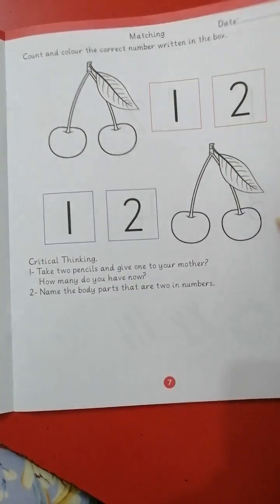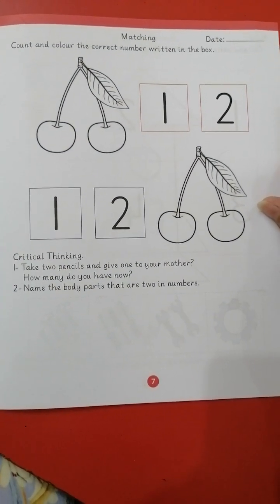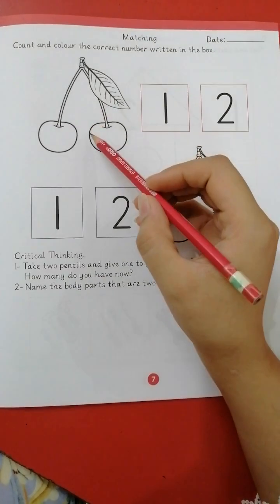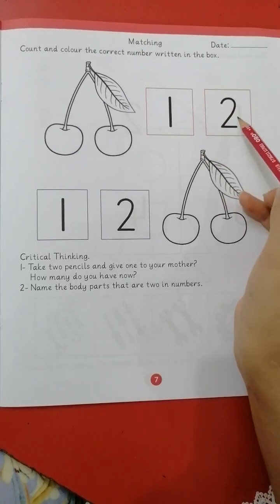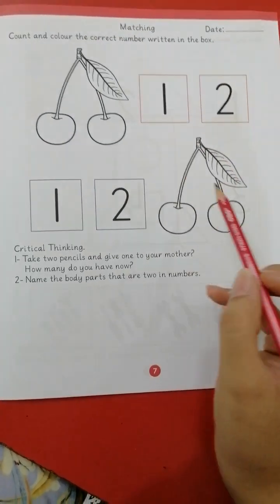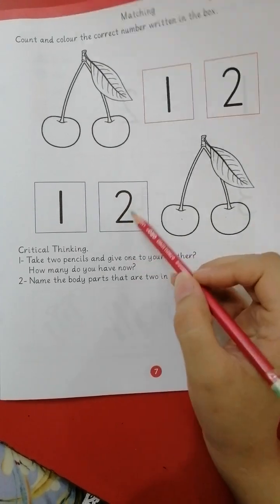Next is matching. Count and color the correct number written in the box. How many cherries we have? One, two. Which one is two? This one you have to color it. Again, how many? One, two. Color two.